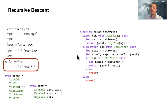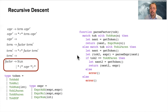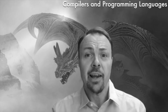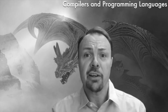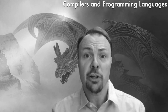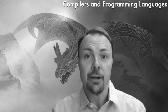So we have covered all cases — using left recursion elimination and recovering left associativity — to do complete recursive descent parsing. Thanks for listening, I hope this video was useful. If you liked it, please subscribe and leave a comment telling me what you want to learn about compilers and programming languages.